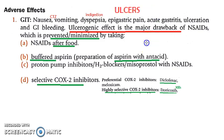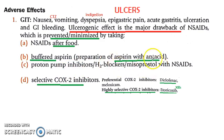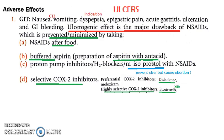The main thing to remember is ulcers — the ulcerogenic effect is the major drawback of NSAIDs. To prevent this, tell patients to take aspirin after food, or give aspirin with antacid buffered. You can also combine NSAIDs with proton pump inhibitors, H2 histamine blockers, and misoprostol. Misoprostol prevents ulcers but can cause abortion, and it is actually combined many times with abortion drugs.